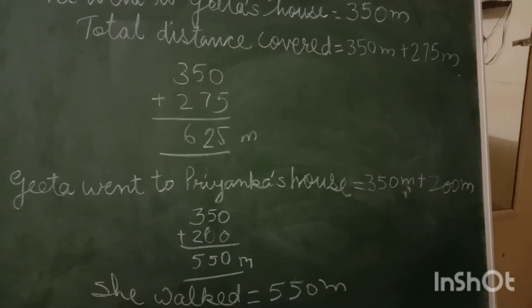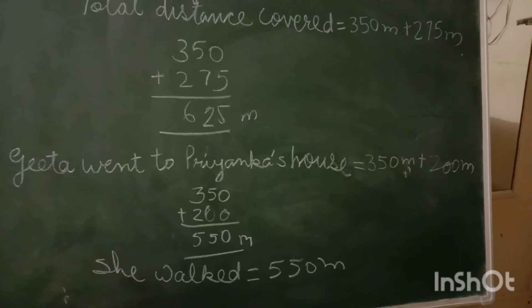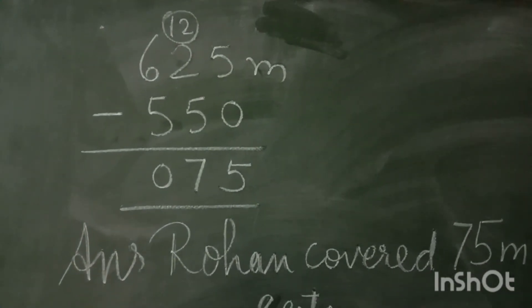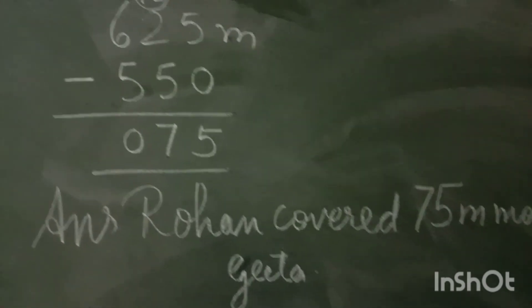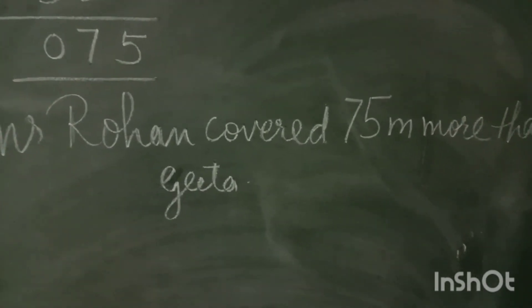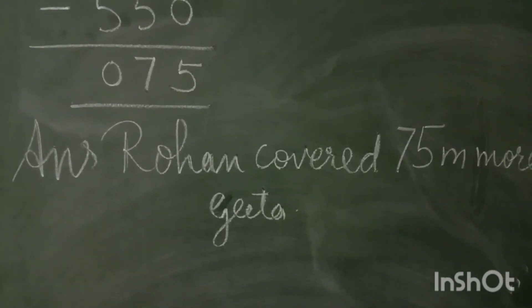So wait, I am giving you solution for that also. So students, you know the subtraction, so you got the answer 75. So Rohan covered 75 meters more than Geeta. So this was the solution of question number three.